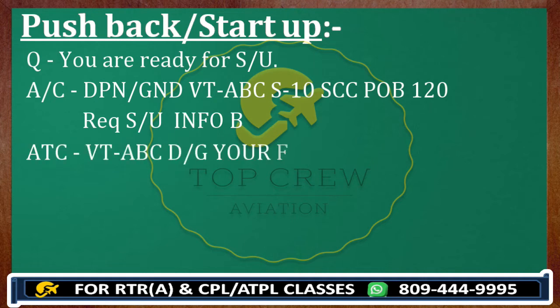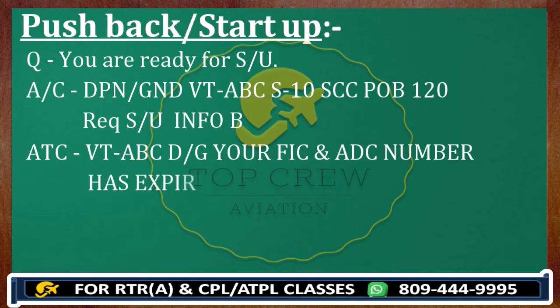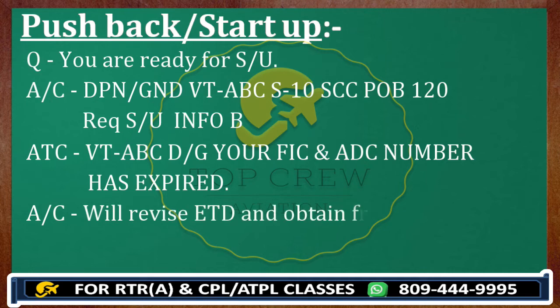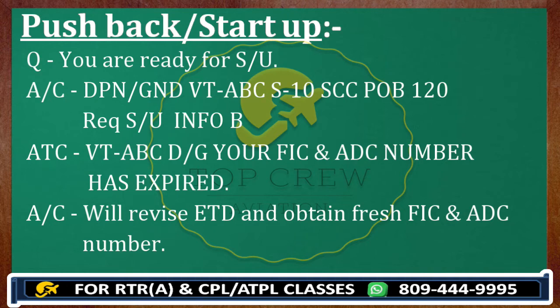What are you going to revert to the ATC? Will revise ETD — expected time of departure — and obtain fresh FIC and ADC number. Victor Tango Alpha Bravo Charlie, once you have a fresh FIC and ADC number, then you can call the ATC and get startup clearance.